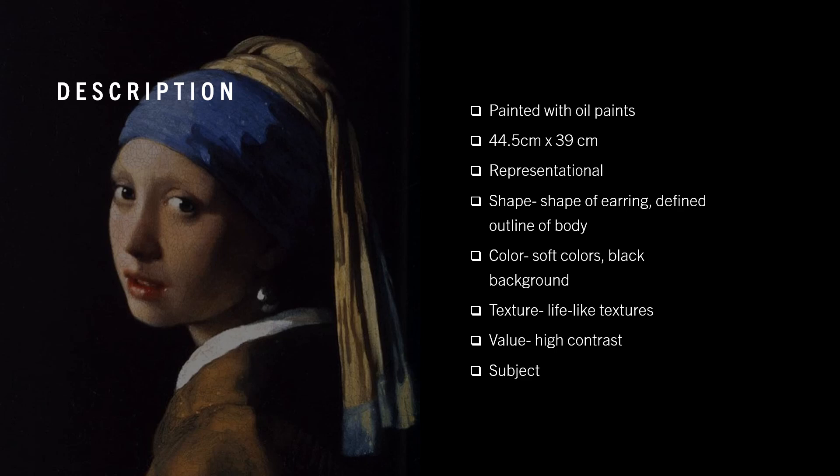Vermeer's Girl with a Pearl Earring was painted using oil paints. The painting is 44.5 cm high and 39 cm wide, or 17.5 by 15 inches, and it is signed by Vermeer, but not dated. It is estimated to have been painted around 1665. This work is two-dimensional and representational, since it portrays a clear subject.